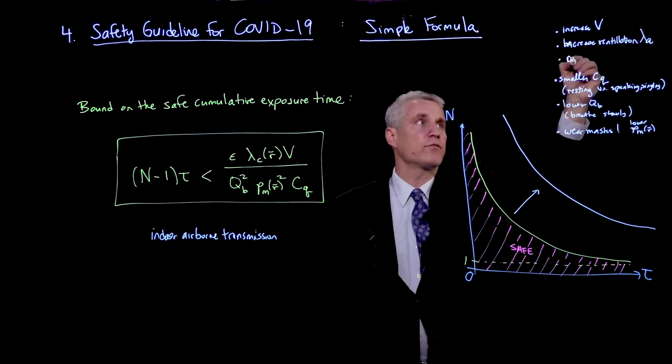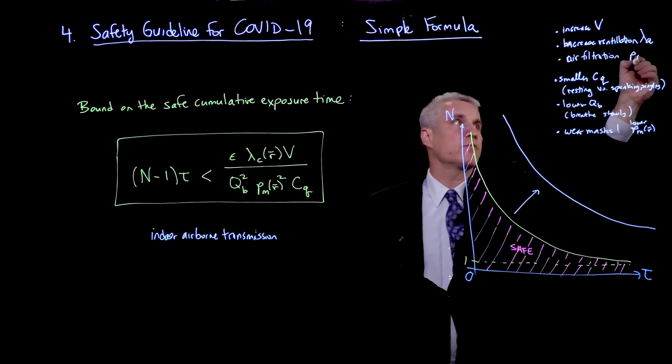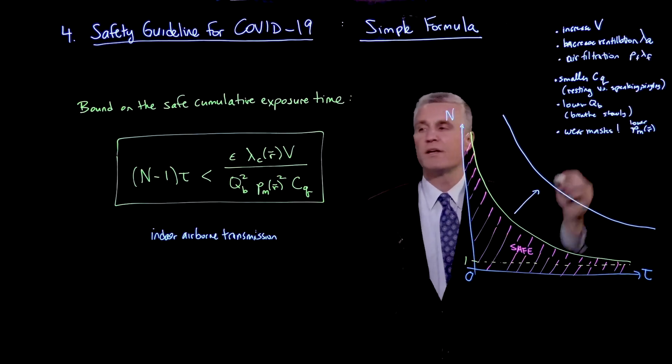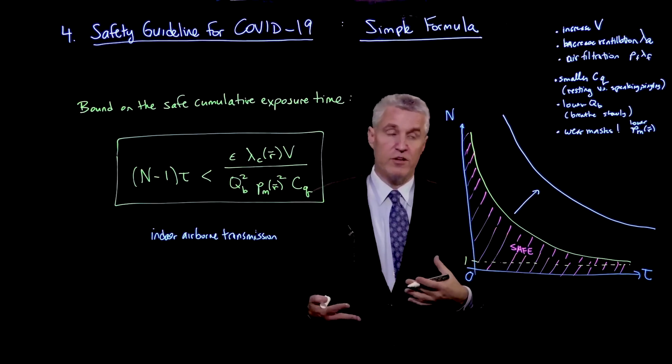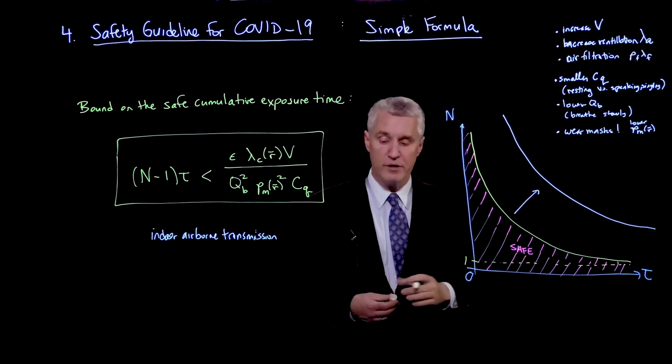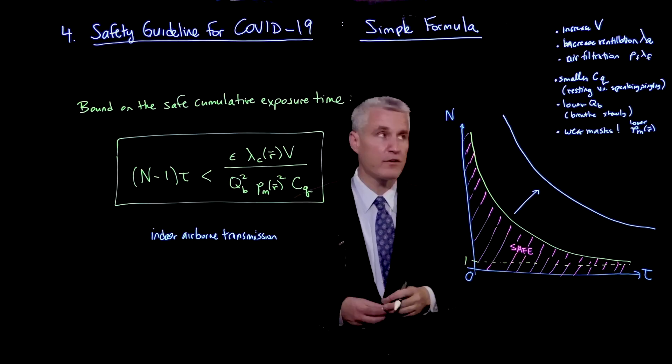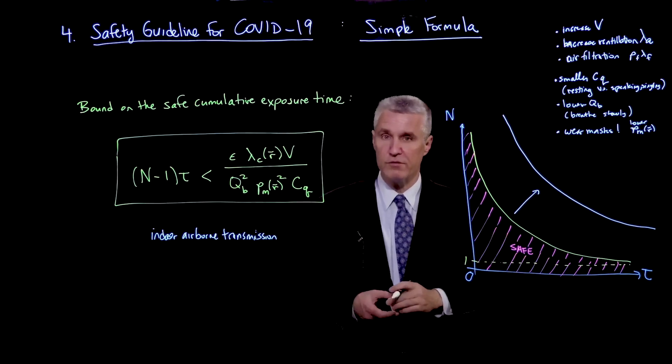We can introduce air filtration. And that's sort of buried within lambda C. That's PF lambda F. Although, as we discussed earlier, because you have to have a certain amount of fresh air coming into the room, air filtration doesn't give you as much benefit as you might hope, but can still give you a factor of 5 or something like that if you have 20% outdoor fresh air coming in.